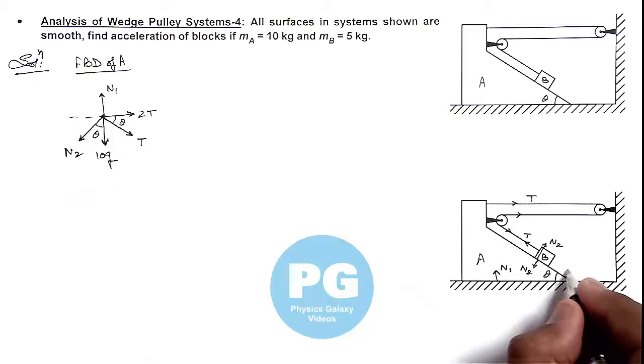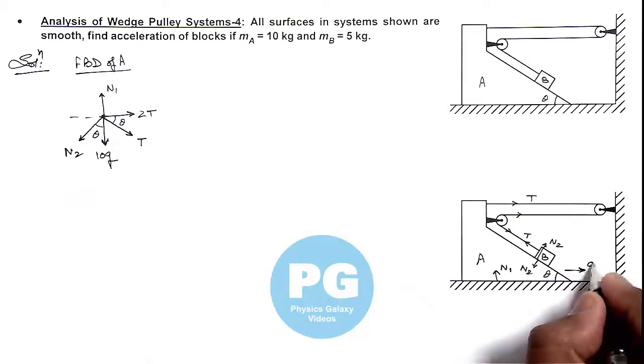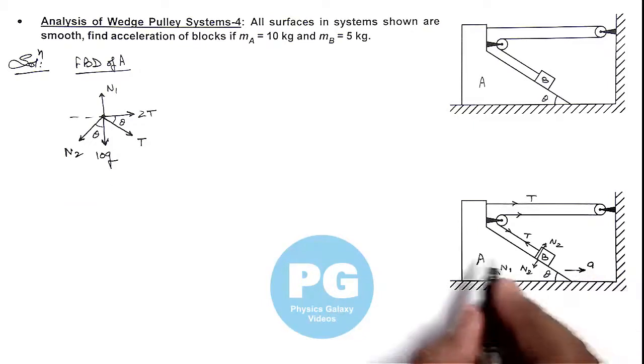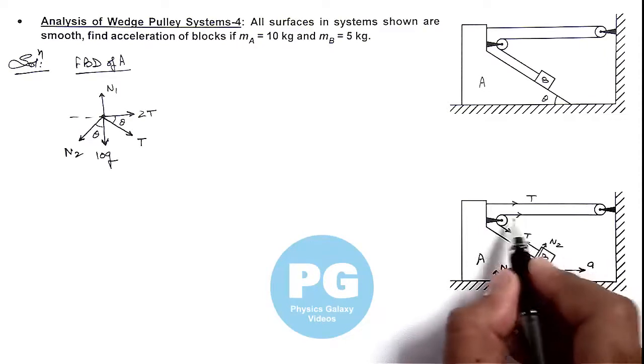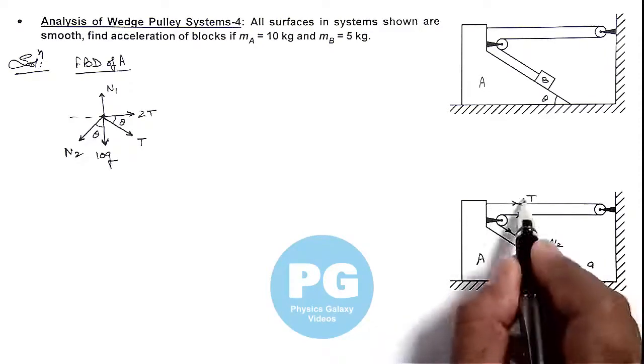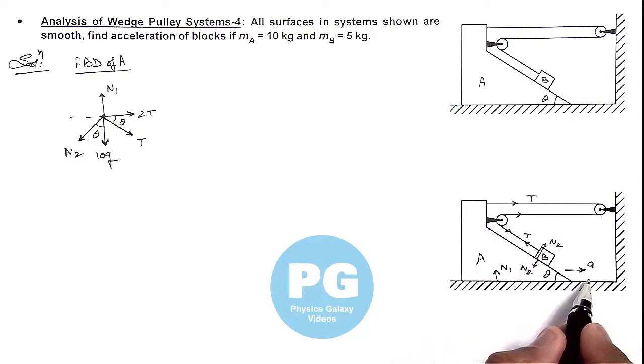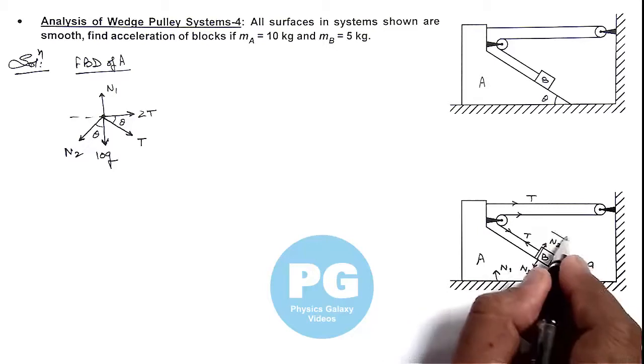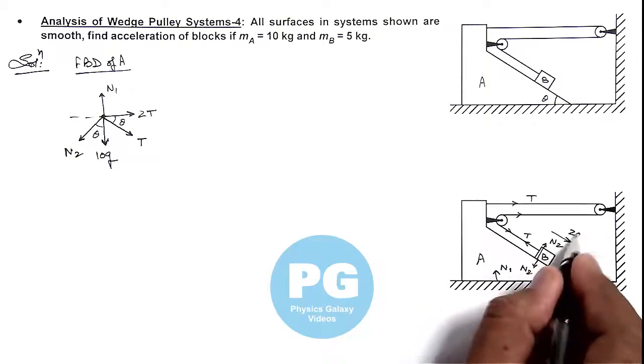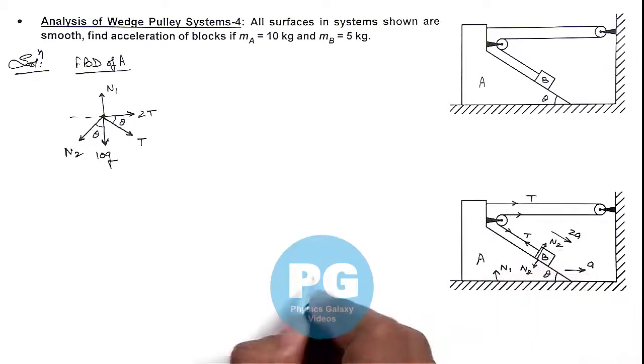If we assume this block is moving toward right with acceleration aA, then the distance by which block A will be displaced, these two strings will get shortened by the same distance, so this will slide by twice the distance along the incline.